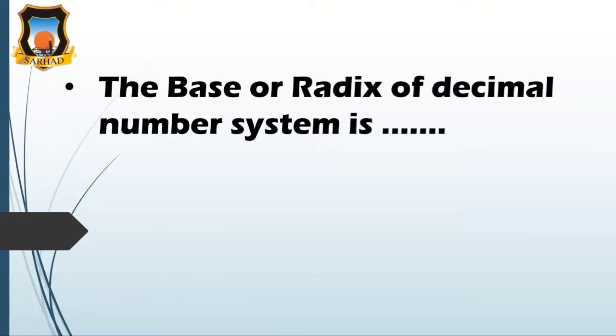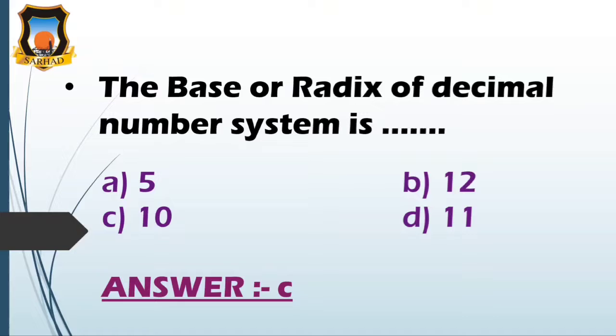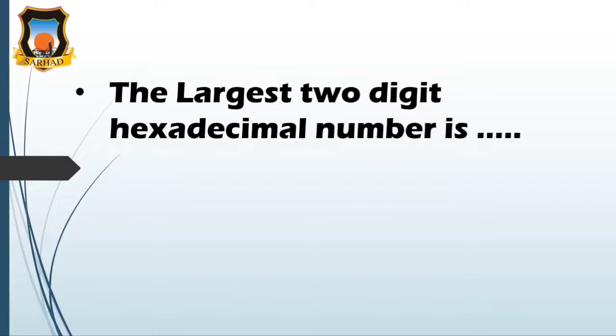Moving on to next, the base or radix of a decimal number system is - option A 5, option B 2 or 12, option C 10, and option D is 11. So the correct answer is C, that is 10. We all know that, that is from 0 to 9.